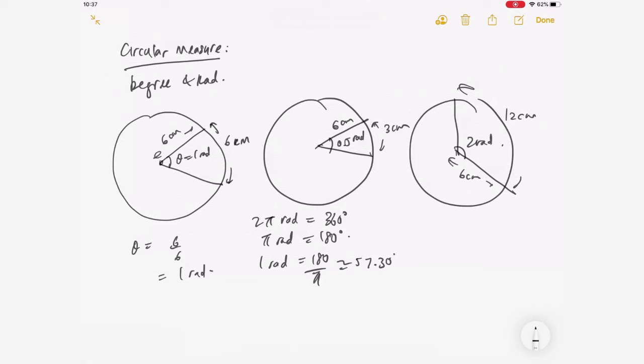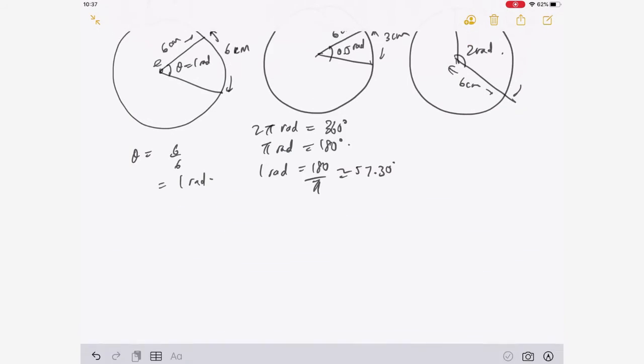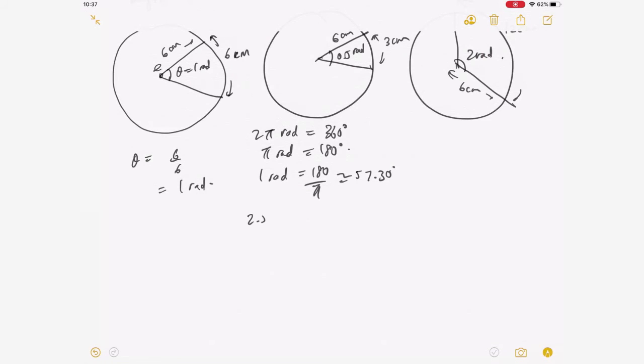So if I want to find what is 2.5 radians in degrees, basically I just take 180 over π times 2.5, so I get my answer in degrees.